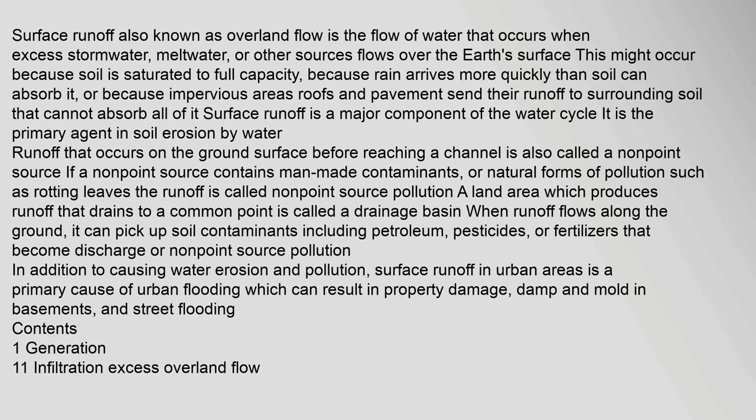Surface runoff, also known as overland flow, is the flow of water that occurs when excess stormwater, meltwater, or other sources flows over the earth's surface. This might occur because soil is saturated to full capacity, because rain arrives more quickly than soil can absorb it, or because impervious areas like roofs and pavement send their runoff to surrounding soil that cannot absorb all of it.